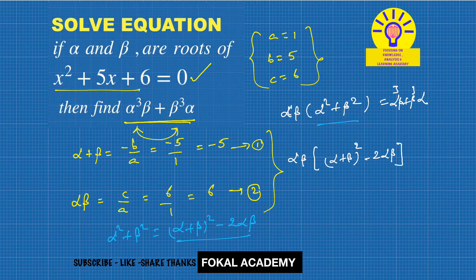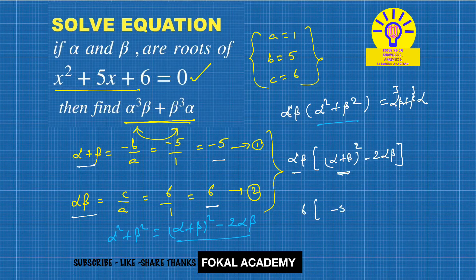So α + β means -5, αβ means 6. So we have 6 × (-5)² - 2 × 6.